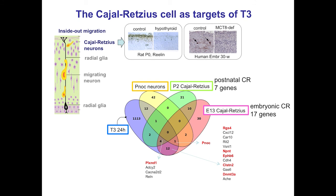Using a similar approach as explained before, we arrived at genes that are directly regulated by thyroid hormone in the embryonic Cajal-Retzius cells. These are genes regulated at the transcriptional level — the red ones — or in the P2-Cajal-Retzius cells.